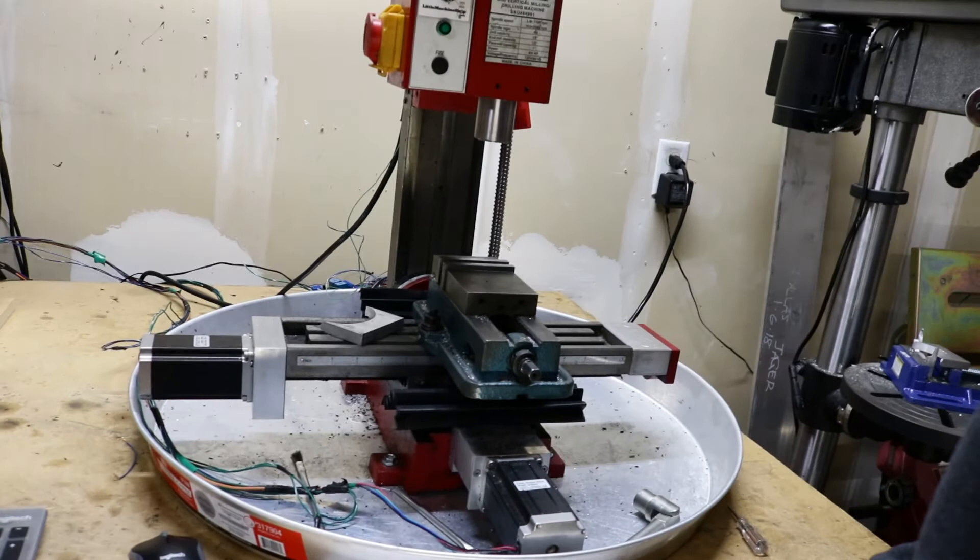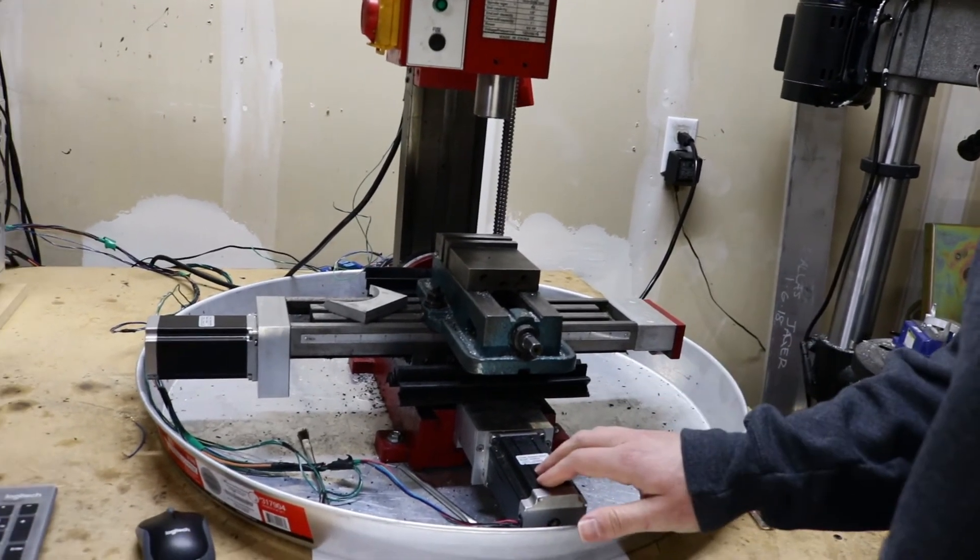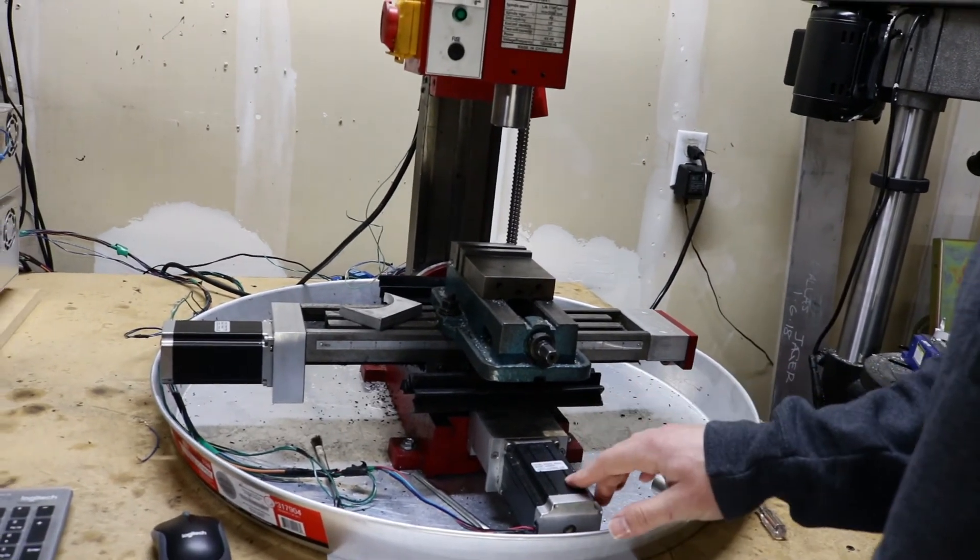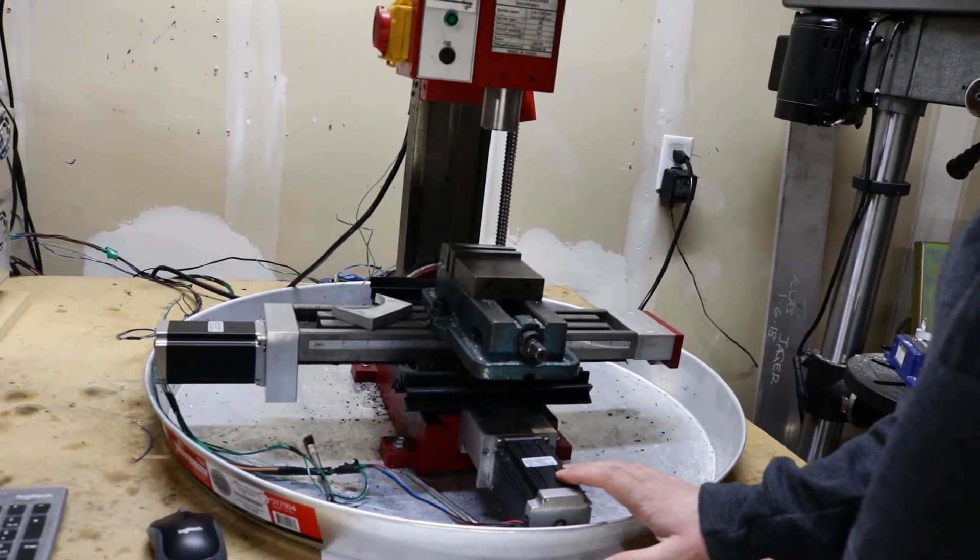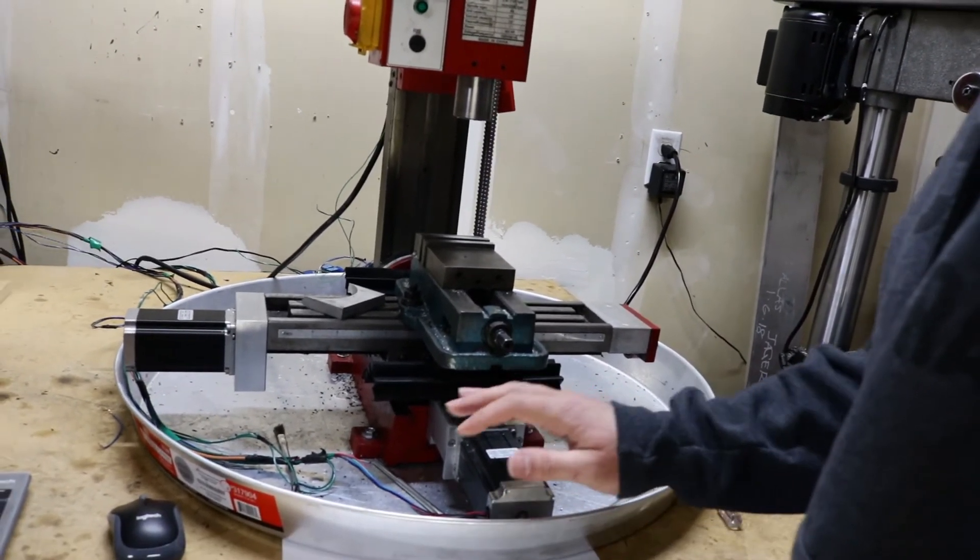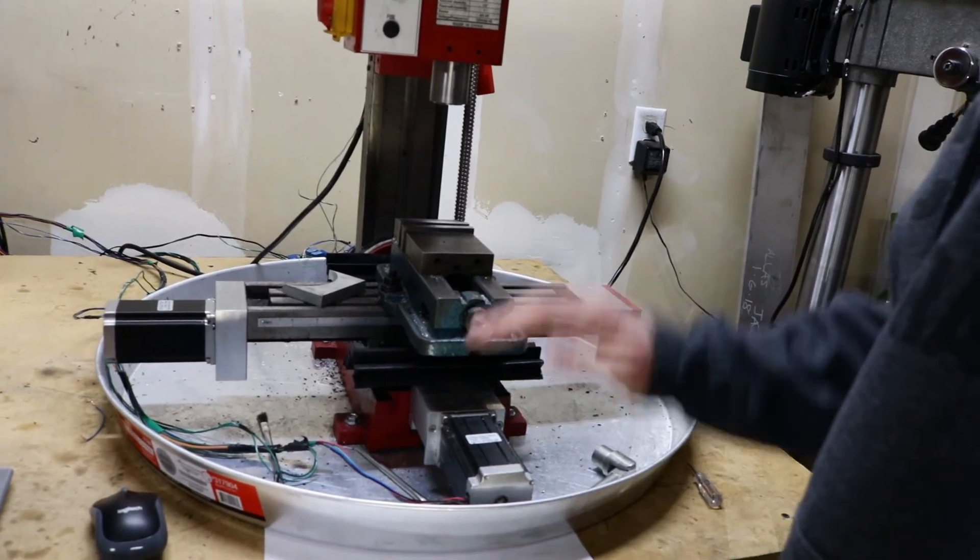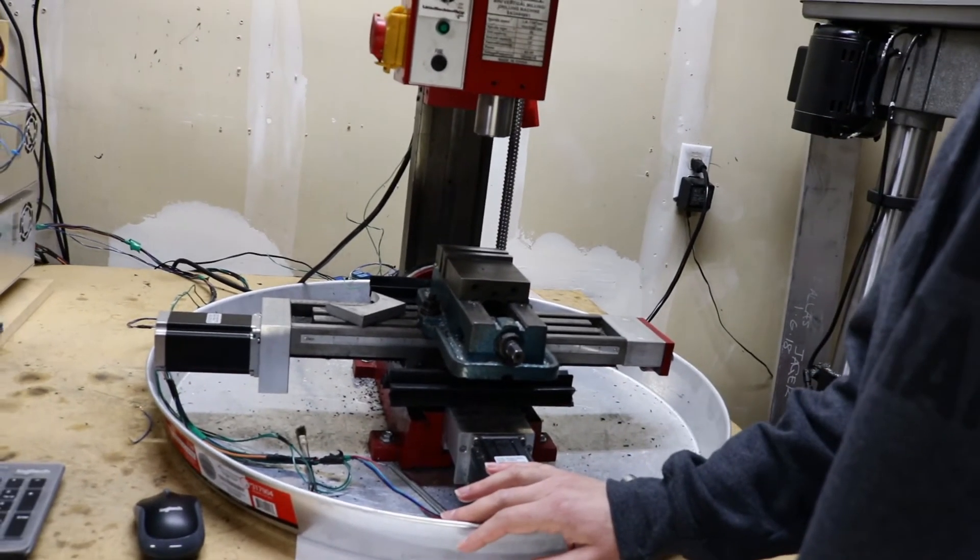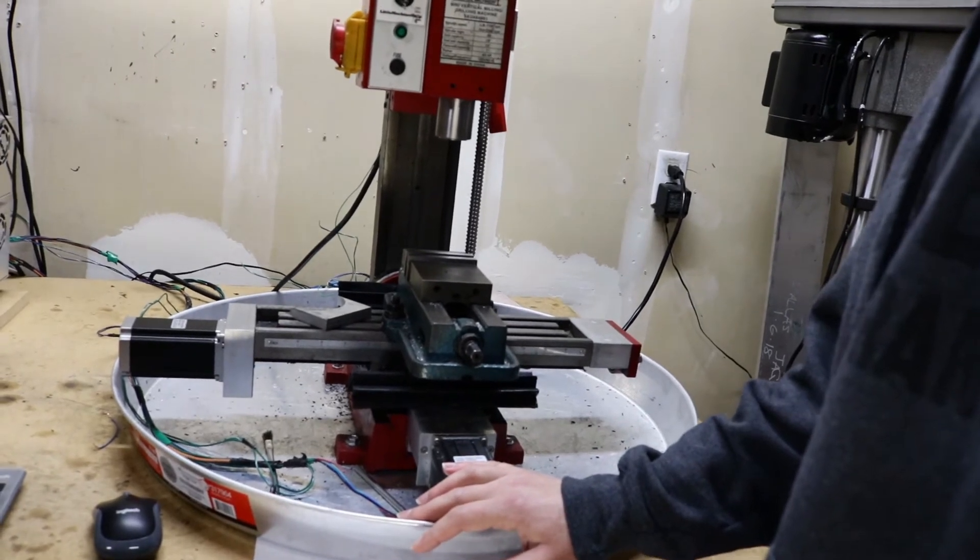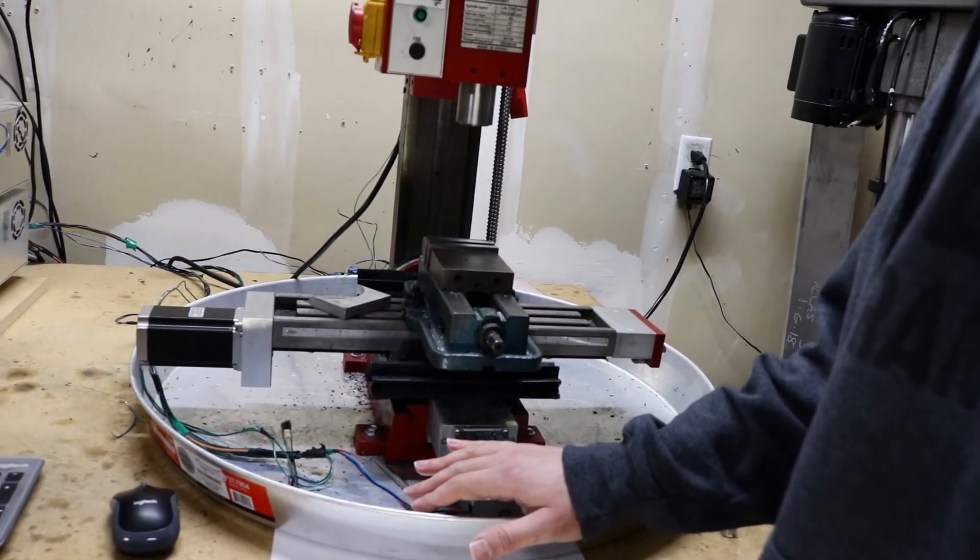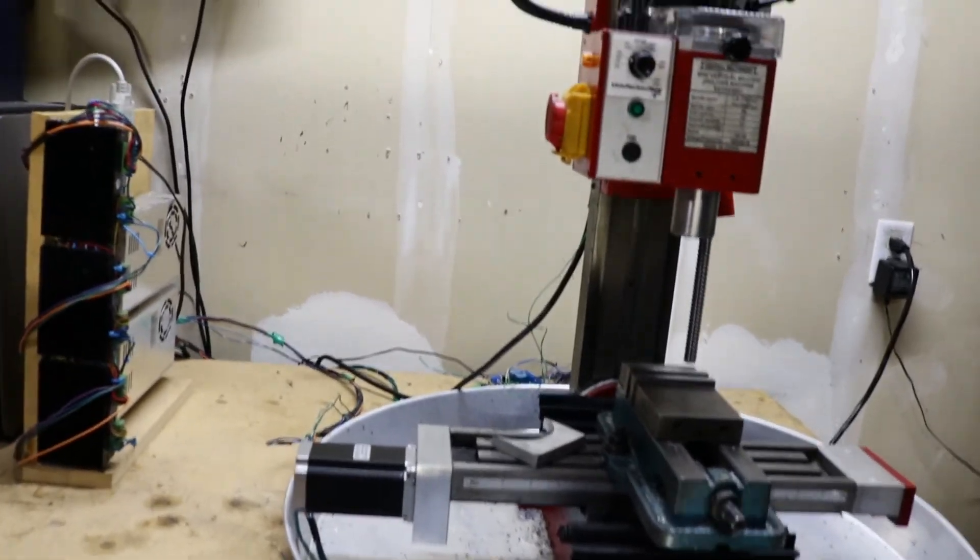I bought all my electronics on eBay. So these are Long's motors, 400, part of the description said 400 ounce inch. The other part said 425 so not a big difference either way. But I've got all three of my motors are the same. If you look up on eBay you know 3 axis CNC kit you'll find all sorts of these. So stepper motors, that's what's going to be driving it.